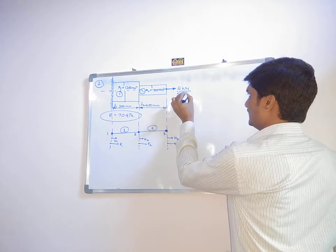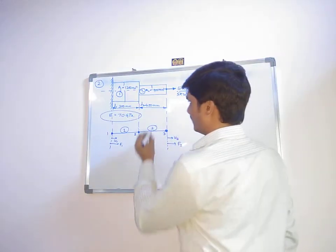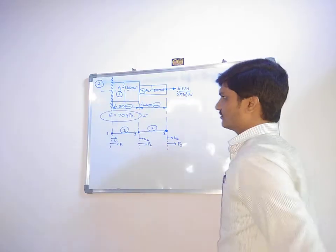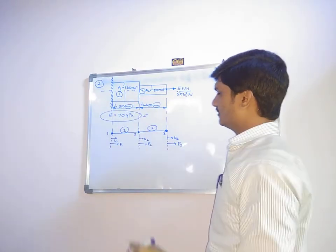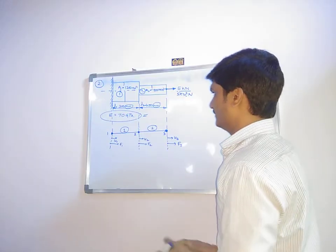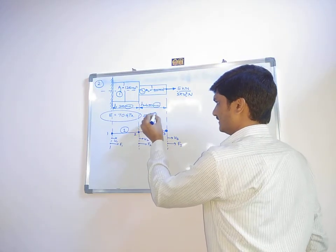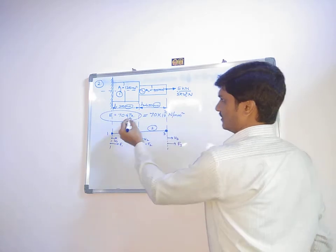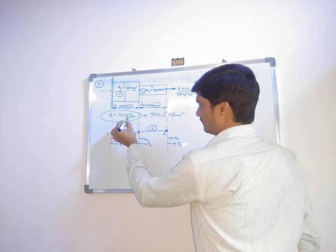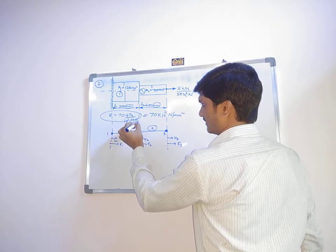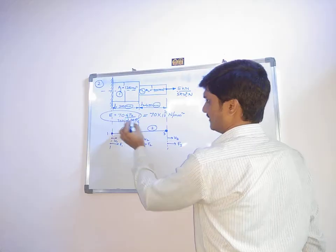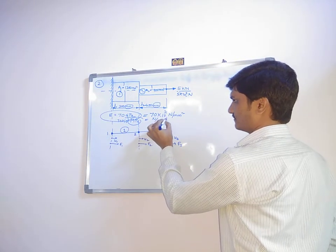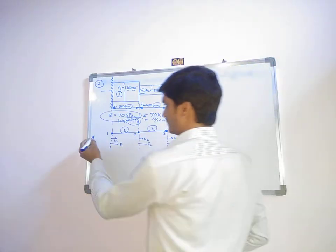The 5 kilo-newton load is written as 5×10³ N. All values are in millimeters — lengths 400, 400, 300 mm, and areas also in mm². We convert Young's modulus: 70 GPa equals 70×10³ MPa, and since 1 MPa equals 1 N/mm², E = 70×10³ N/mm².